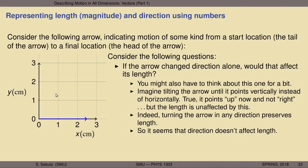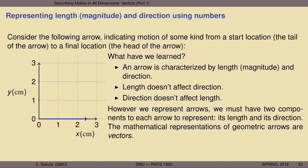If the arrow changed direction alone — imagine grabbing the arrowhead and rotating it around while it's made of incompressible material — would that affect its length? No. We could tilt the arrow until it points up along only the vertical axis and it would still measure 2.5 centimeters, this time along the y direction. So turning the arrow in any direction preserves its length. Summarizing: an arrow is characterized by two quantities, length and direction. Length doesn't affect direction, and direction doesn't affect length. However we choose to represent arrows, we must have two components: length and direction.